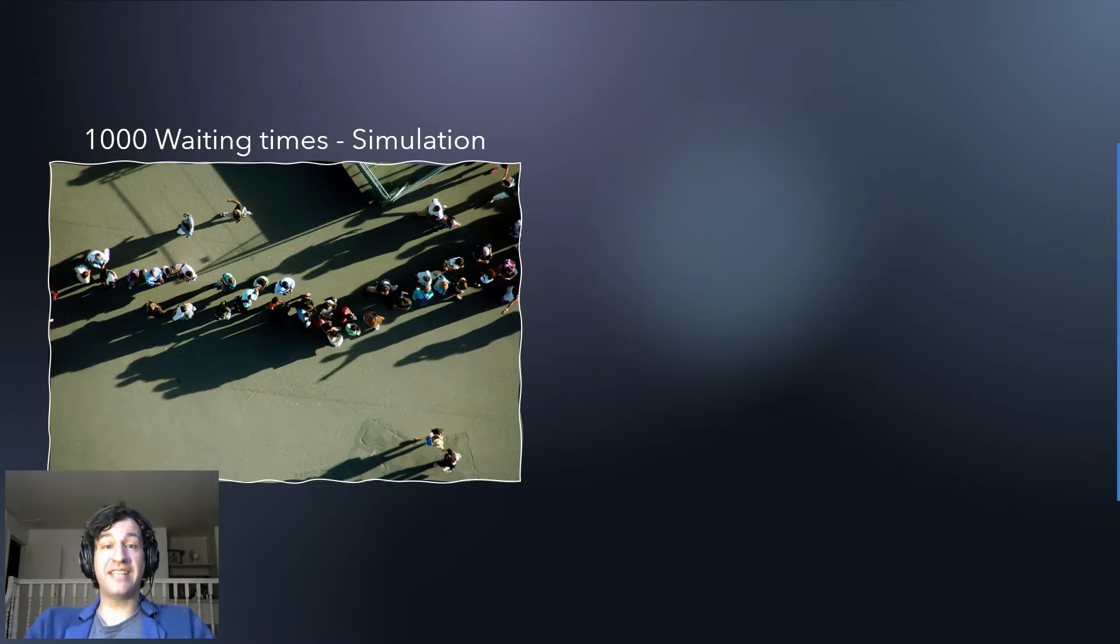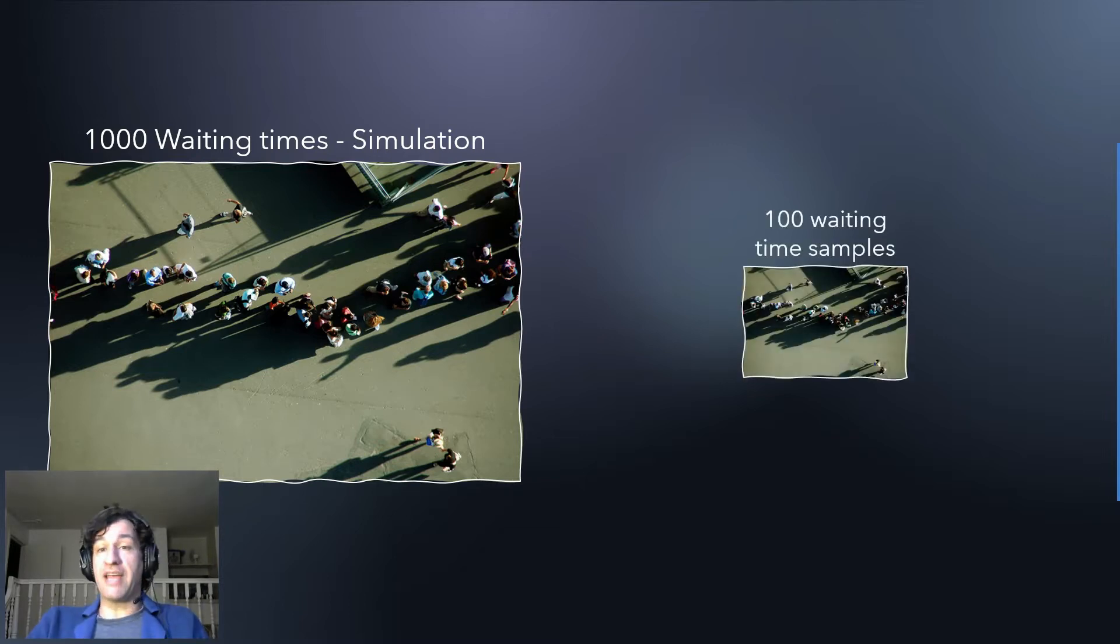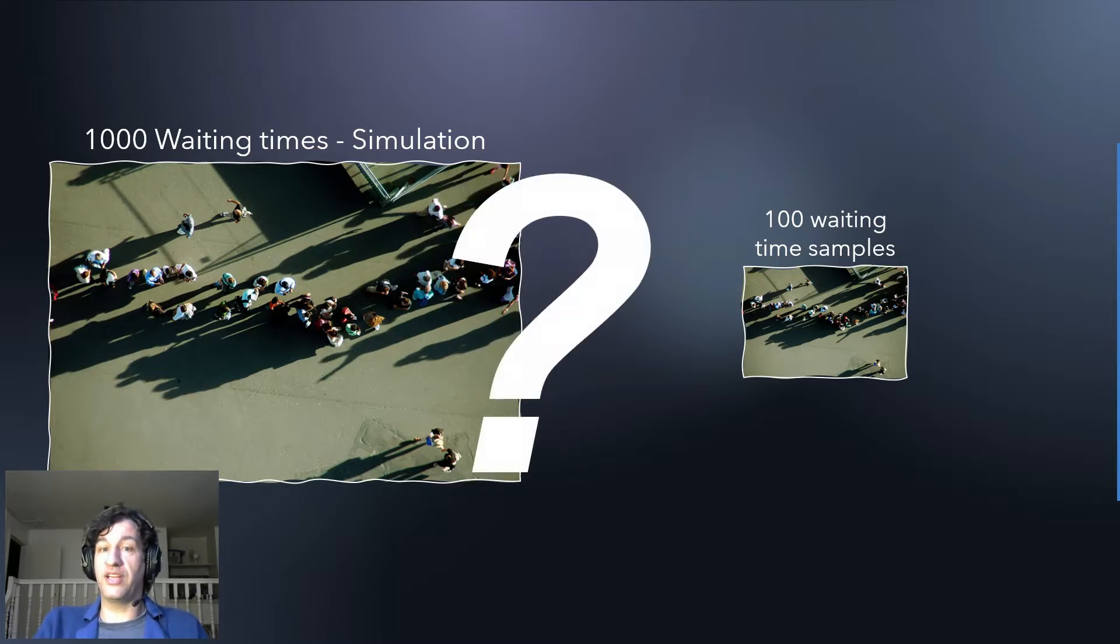Imagine you have a model that has a process that a thousand people need to go through, so you will have a thousand waiting times and you know that each person will wait a different amount of time. So the question we want to ask is how much is that waiting time? If you have empirical data you can answer this question because you know how much time people wait. If you have a hundred waiting time samples and a thousand waiting times that need to be occurring in the simulation, so what do you do? That is the question we need to answer here.